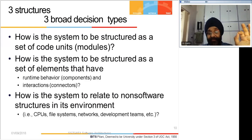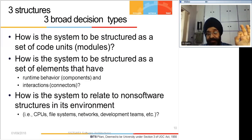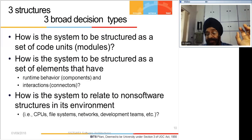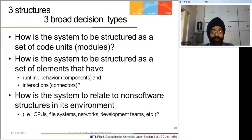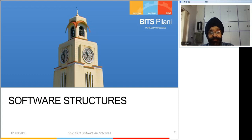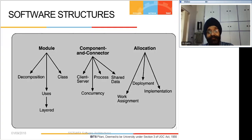So we have said there are three things: modules, components, and allocation. These are three broad decision types that an architect has to take. You've got to divide into modules, see how they communicate with each other, and how you allocate to resources. Within each of these we have got various subtypes.